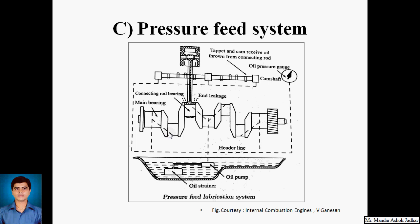From the crank pin, oil reaches the piston pin bearing through the hole drilled in the connecting rod. The cylinder walls, tappet rollers, pistons, and piston rings are lubricated by oil spray from around the piston pin and the main and connecting rod bearings. The big end of the connecting rod is provided with holes through which pressurized oil comes out — also called end leakage — directly lubricating the piston rings, piston pin, and tappets on the camshaft.